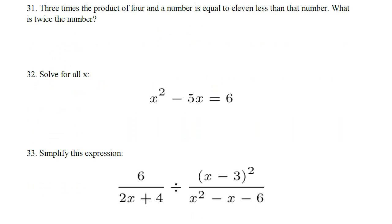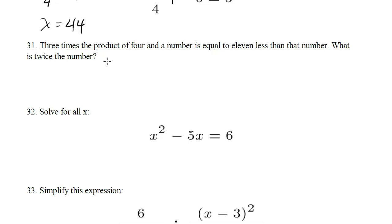Number 31: Three times the product of 4 and a number is equal to 11 less than that number. What is twice the number?